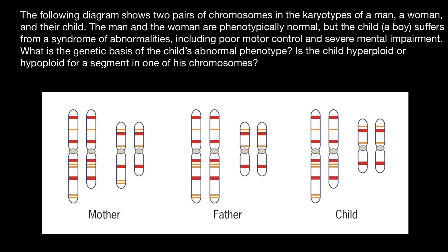Let's analyze. If you take a look at the father's genotype, we see that he has two chromosomes. Let's say this is going to be chromosome number one — these chromosomes are identical, the same size. And chromosome number two, also identical and of the same size. Now comparing with the mother's genotype, chromosome number one — we see that one is longer than the other. And chromosome number two is also of two different sizes.